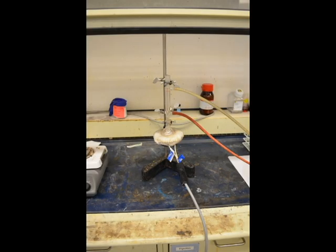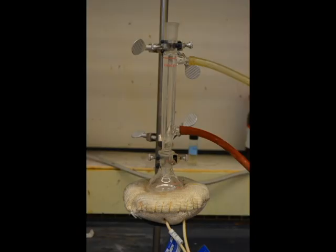While it is stirring, we must set up the reflux apparatus, which consists of a round bottom flask attached to a condensing tube that is cooled with water. A heating mantle is placed below the flask in order to heat the reaction.